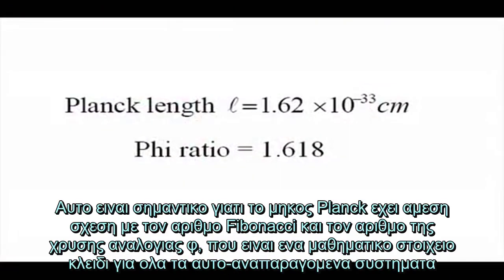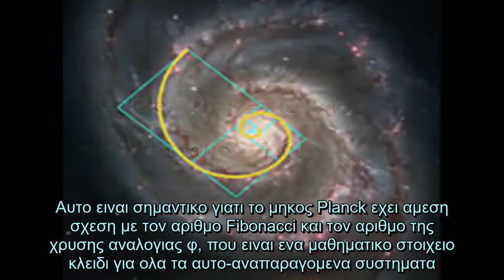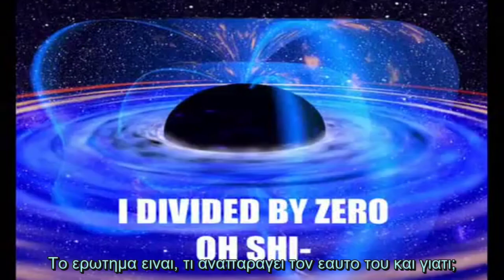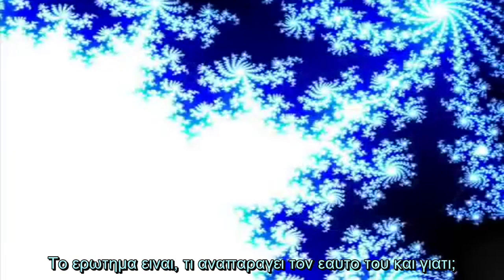This is important because the Planck length relates directly to the Fibonacci number and phi-golden ratio, which is a key mathematical element in all self-replicating systems. The question is, what is replicating itself, and why?